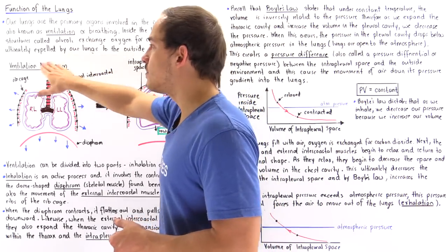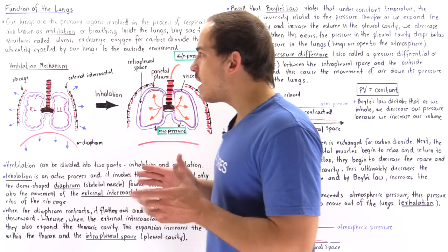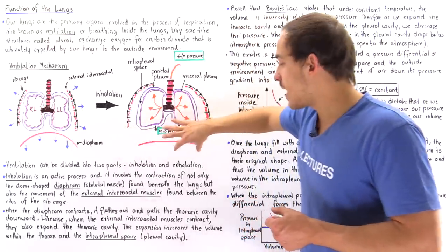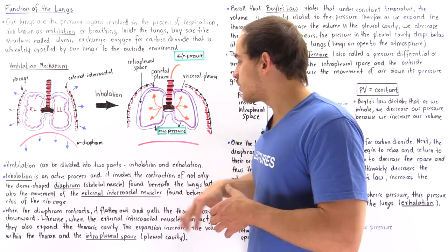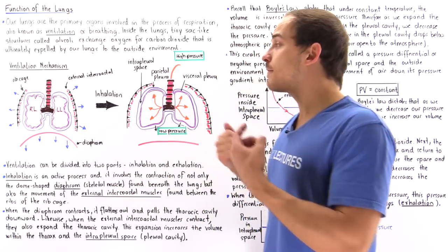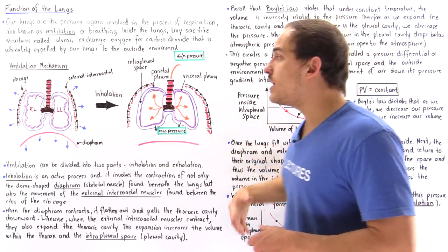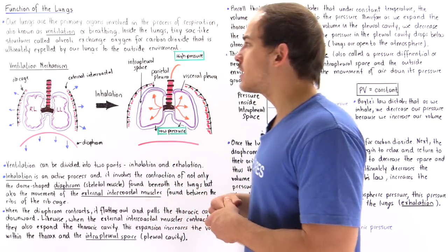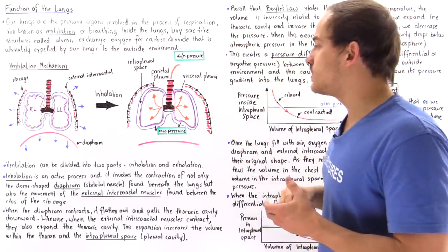We're going to describe the mechanism by which ventilation is carried out inside human lungs. Let's begin by breaking down the process of ventilation into two stages: the process of inhalation and the process of exhalation. These two processes are actually opposite with respect to one another. Inhalation is when we bring air into the lungs, and exhalation is the process by which we expel air from the lungs to the outside environment. More specifically, inhalation brings in oxygen, and exhalation removes the carbon dioxide produced inside our cells as a byproduct of cellular respiration.